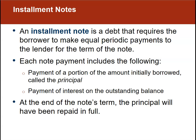When we talk about installment notes, an installment note is a debt that requires the borrower — in our case, some type of a business — to make equal periodic payments to the lender for the term of the note. This equal periodic payment is broken down into a couple of parts. The first part is the payment of a portion of the amount initially owed, called the principal. So if we borrow $20,000, we're ultimately going to have to pay $20,000 back in principal.